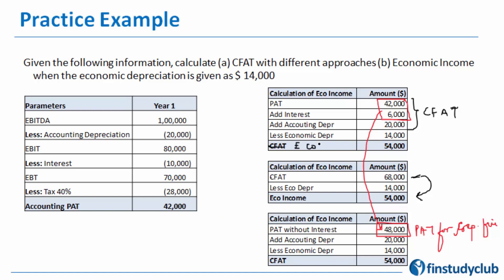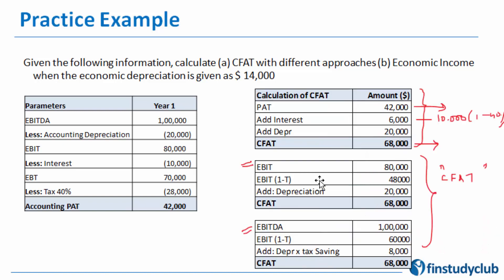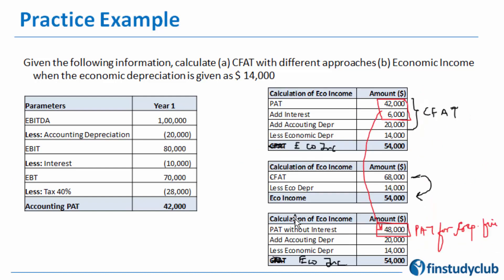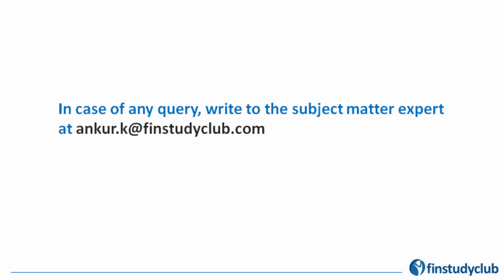There's a small template error here — copy-pasting from one part to another caused some cells to still read CFAT instead of economic income. This is exactly the type of template error we discussed in the pitfalls of capital budgeting. I hope this session has brought some clarity. For further queries, reach out at tunkud.k@finstudyclub.com. Thank you.